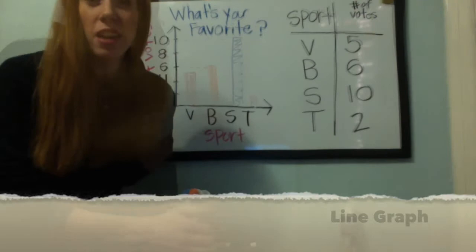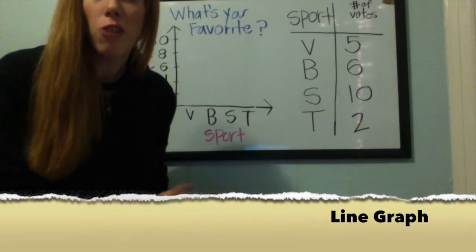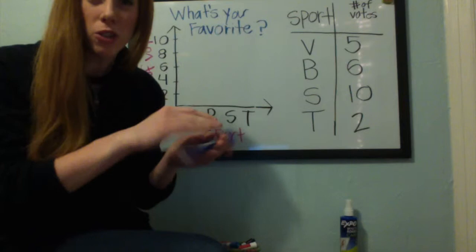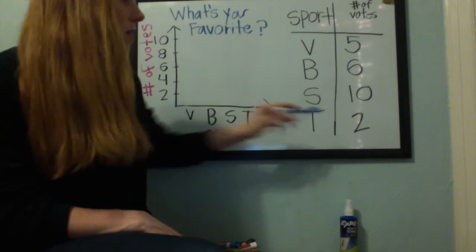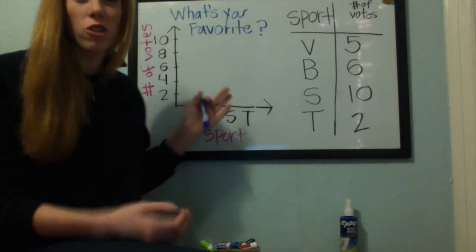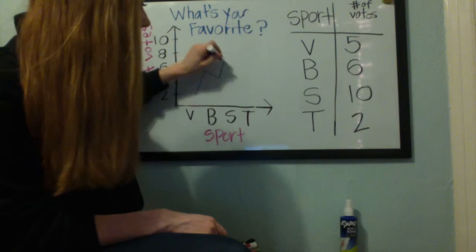Now using the same information, we're going to construct a line graph. A line graph is used to show how things change over time. It can also show the difference between two categories and show which is the maximum — the highest number of votes — or the minimum, which would be the lowest number of votes. This one we're just going to do a single line graph, so it's going to have one line. Some graphs can also have multiple line graphs.